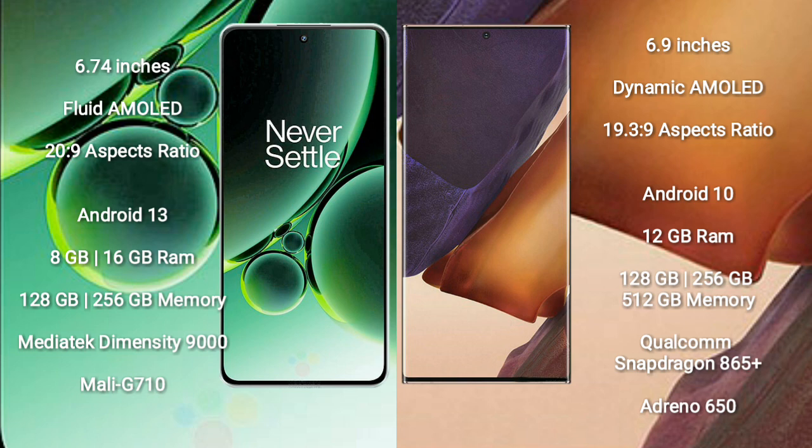OnePlus Nord 3 comes with 8GB or 12GB RAM and 256GB internal storage. It features the MediaTek Dimensity 9000 processor and GPU Mali-G710.